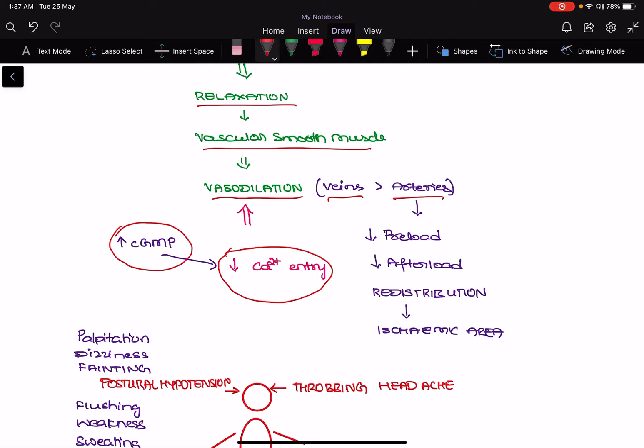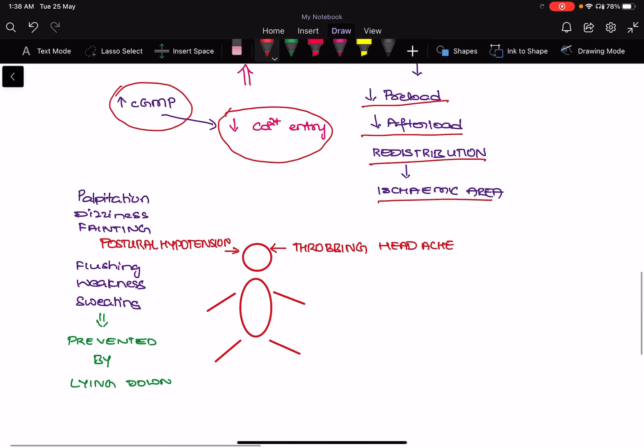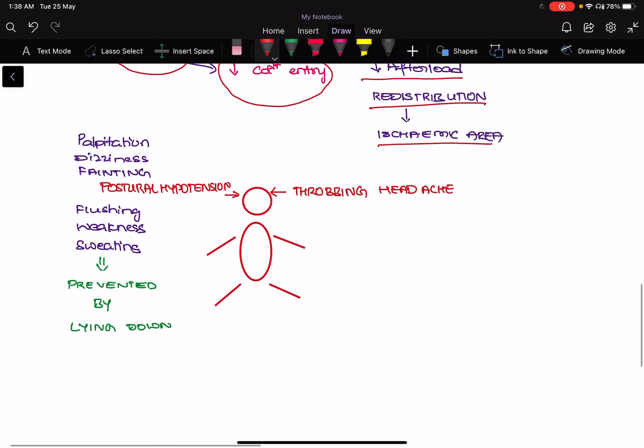As you know, the veins are more dilated than the arteries. It helps in reduction of the preload, it helps in reduction of the afterload, and a very important mechanism is it helps in redistribution of the blood to the ischemic area in angina. Basically, this drug is used in the treatment of angina.